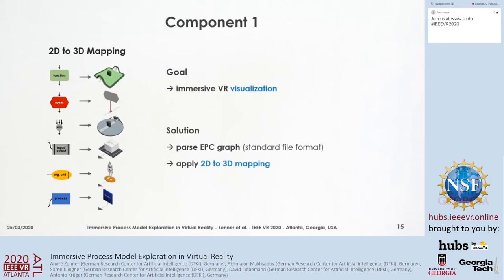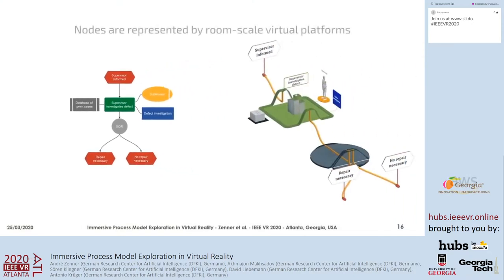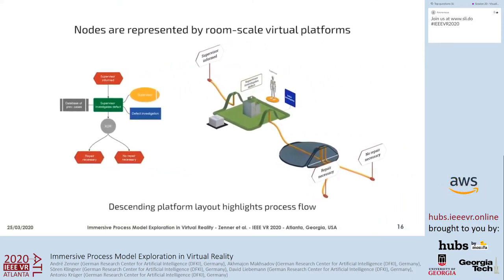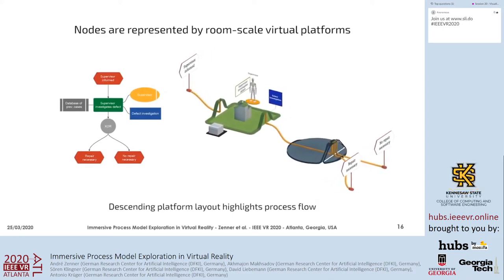The 2D to 3D mapping reads in the 2D graph structure from a standard file format and applies a mapping that translates the 2D graph into an immersive virtual reality environment. The immersive environment resembles the graph in 3D as a structure made out of floating platforms. Important node types such as function and connector nodes are represented by room-scale walkable platforms that carry interactive sockets the user needs to interact with as he walks through the process. You can see an example showing a simple 2D EPC on the left and the corresponding immersive virtual environment on the right, with a green function platform and a logical connector platform in grey.